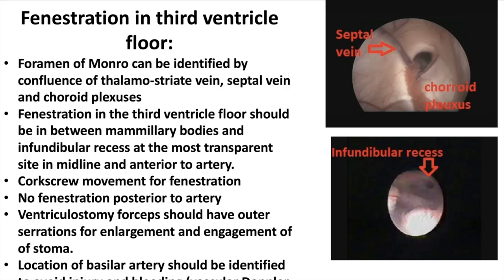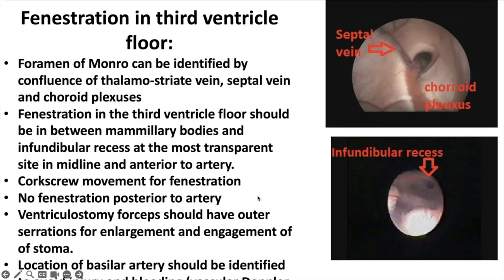Perforation in the third ventricle floor should be between the mammillary bodies and the infundibular recess, at the most transparent place in the midline, and always anterior to the basilar artery or its branches. A Fogarty or corkscrew movement can be used for fenestration. Never perforate posterior to the basilar artery or its branches, as there may be perforators.